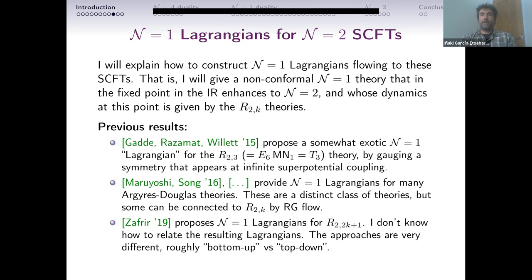What Maruyoshi-Song find doesn't directly apply to R_{2,k}, and our constructions don't immediately give Lagrangians for Argyres-Douglas. We can find some of the Maruyoshi-Song Lagrangians in some special cases, so there's some overlap, which is a nice check. A paper that is also very relevant is one by Zafrir, who finds N=1 Lagrangians for R_{2,2k+1}. I don't know how to relate his Lagrangians to ours — the approaches are very different. He searches for theories while we construct them. But in our construction you can see the full symmetry group or at least the maximal-rank subgroup, which is a technical advantage.